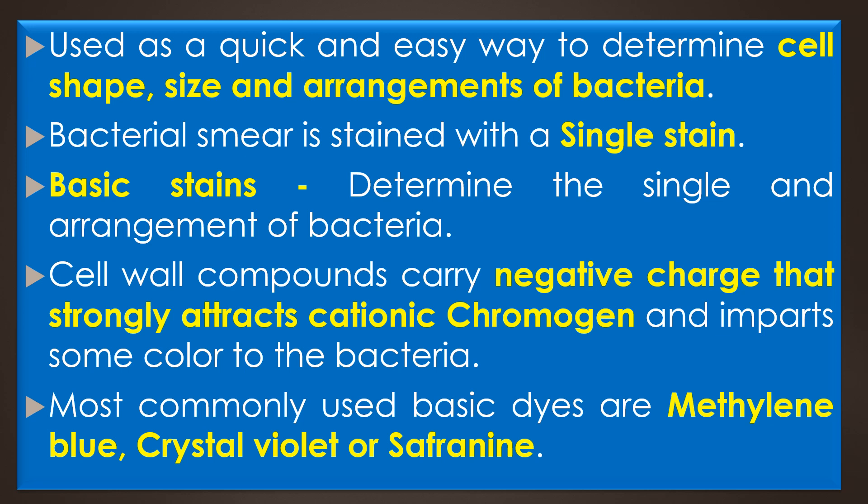In this staining, the bacterial smear is stained with a single stain, and basic stains are usually preferred to determine the shape and arrangement of bacteria. The cell wall compounds carry a negative charge that strongly attracts the cationic chromogen and imparts color to the bacteria. Some of the most commonly used basic stains for simple staining are methylene blue, crystal violet, or safranin.